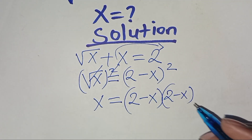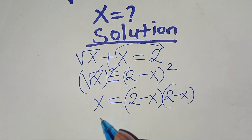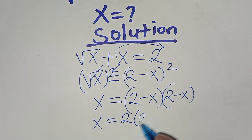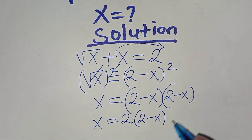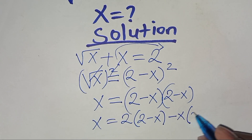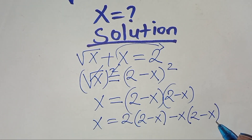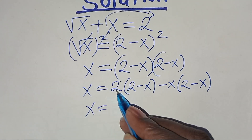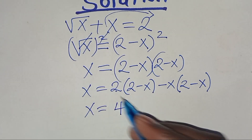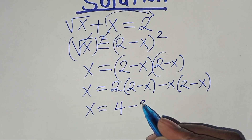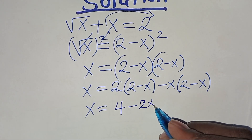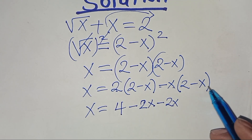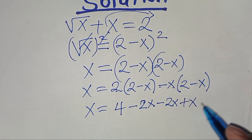After squaring, the left side becomes x, and the right side is (2 minus x) squared. If we expand this, it is the same as 2 times (2 minus x) subtract x times (2 minus x). Expanding gives: 4 minus 2x minus 2x plus x squared.